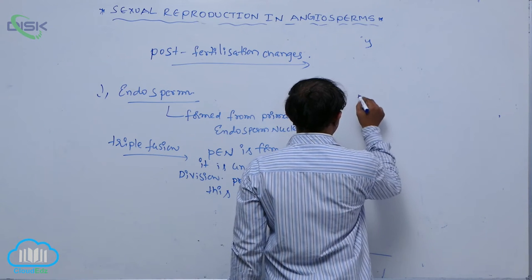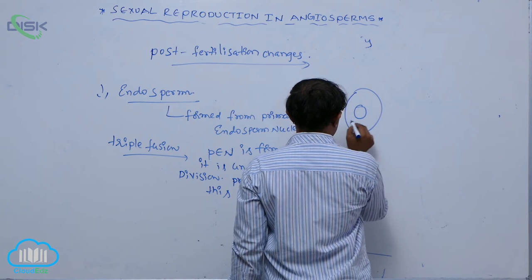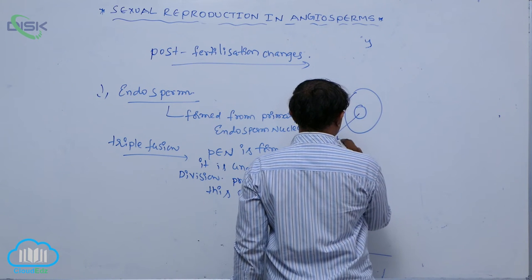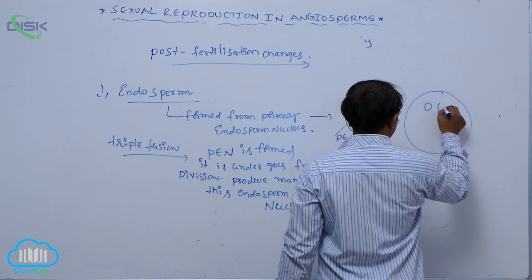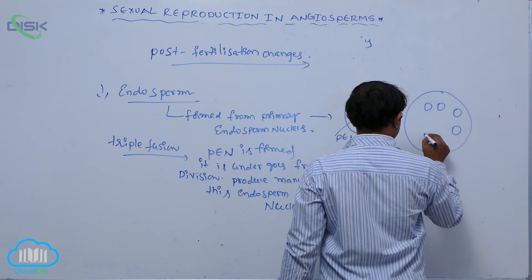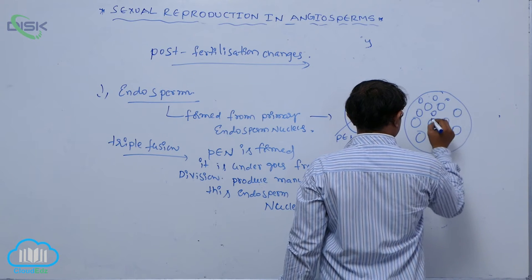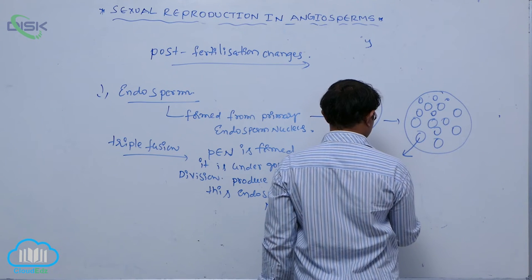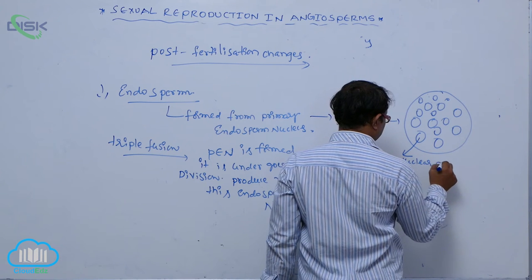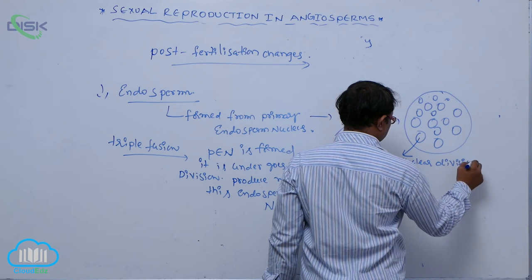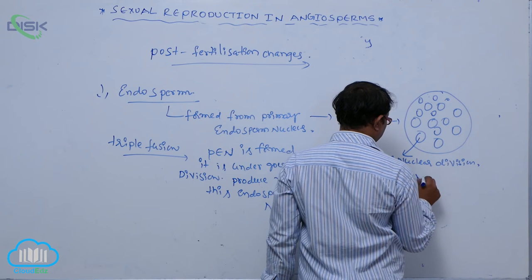For example, it is a primary endosperm nucleus, PEN. It undergoes free nuclear division, producing number of nuclei. Rather, free nuclear divisions produce nuclear endosperm.